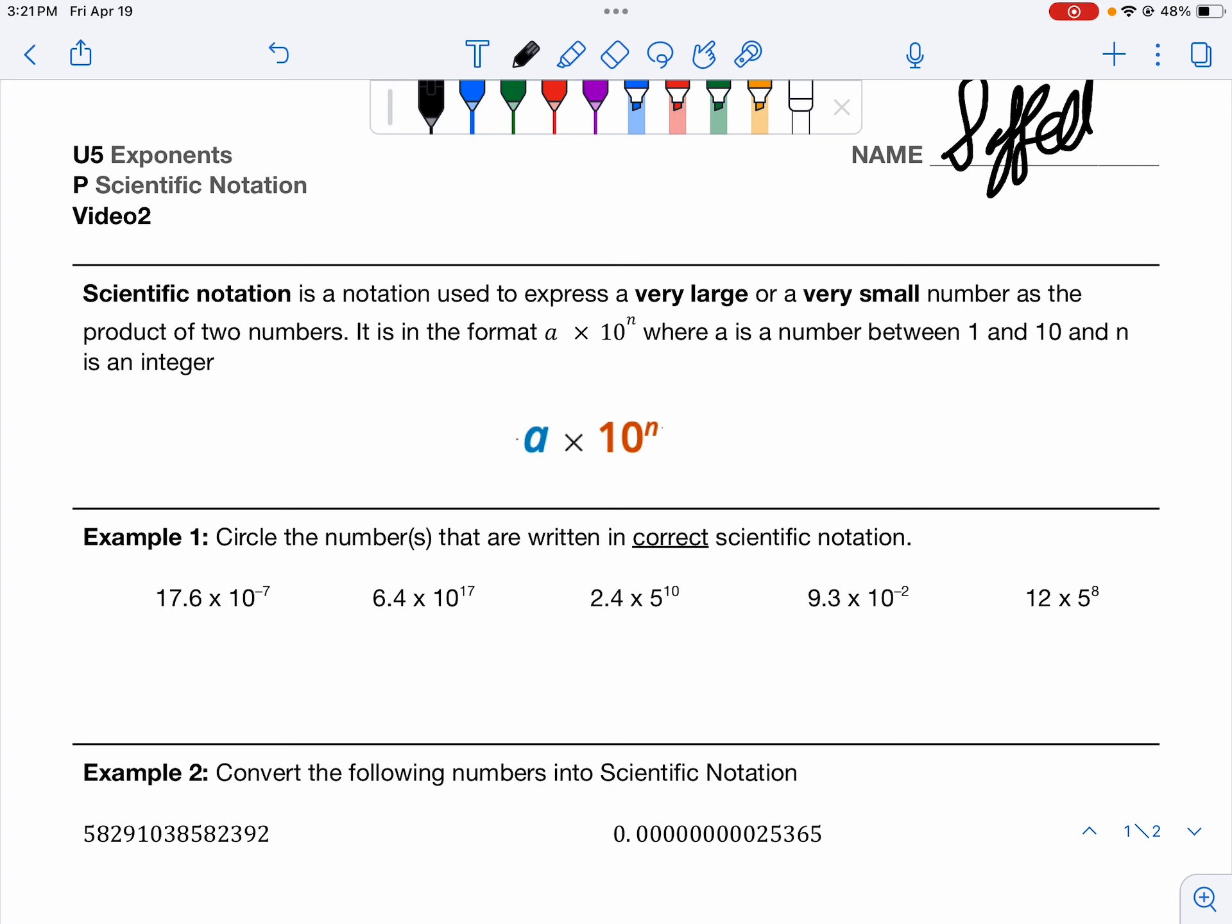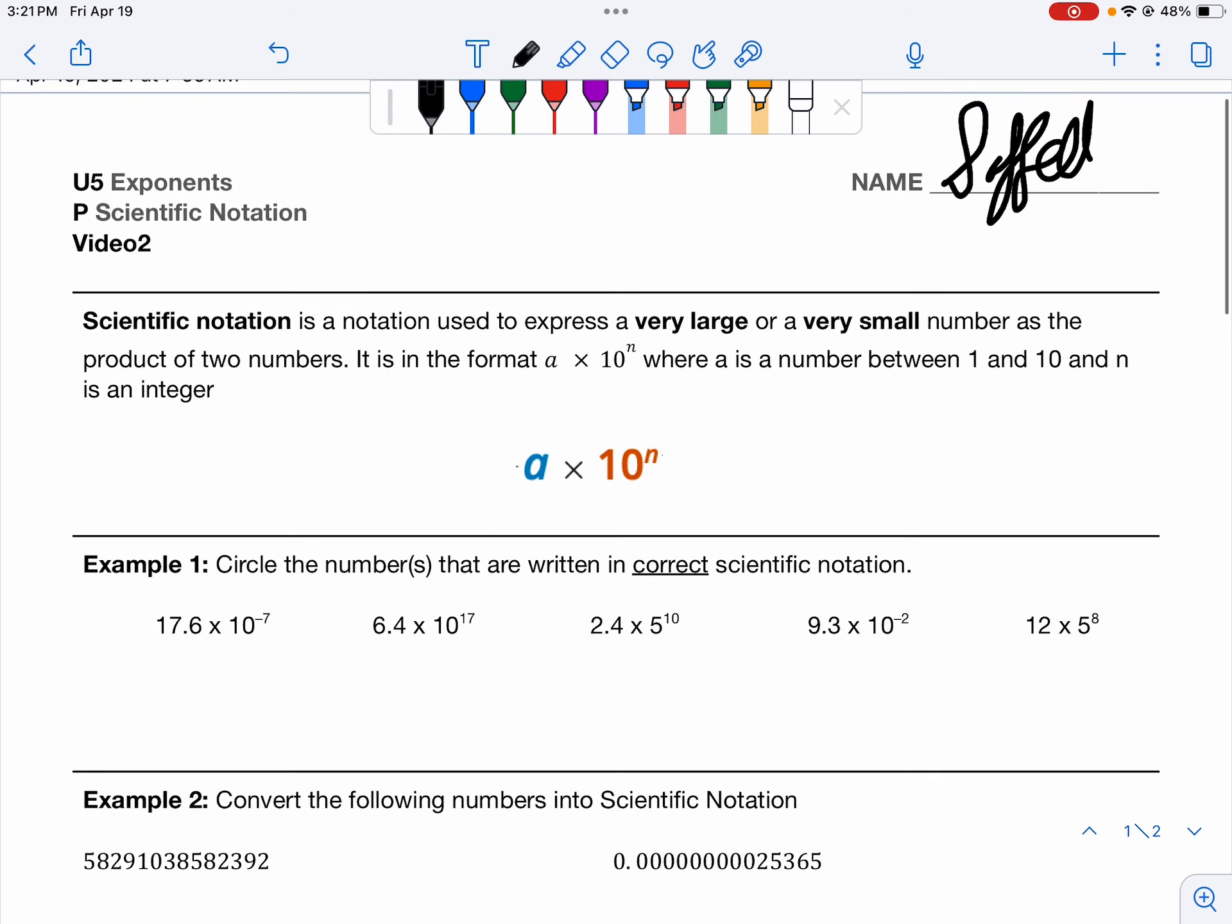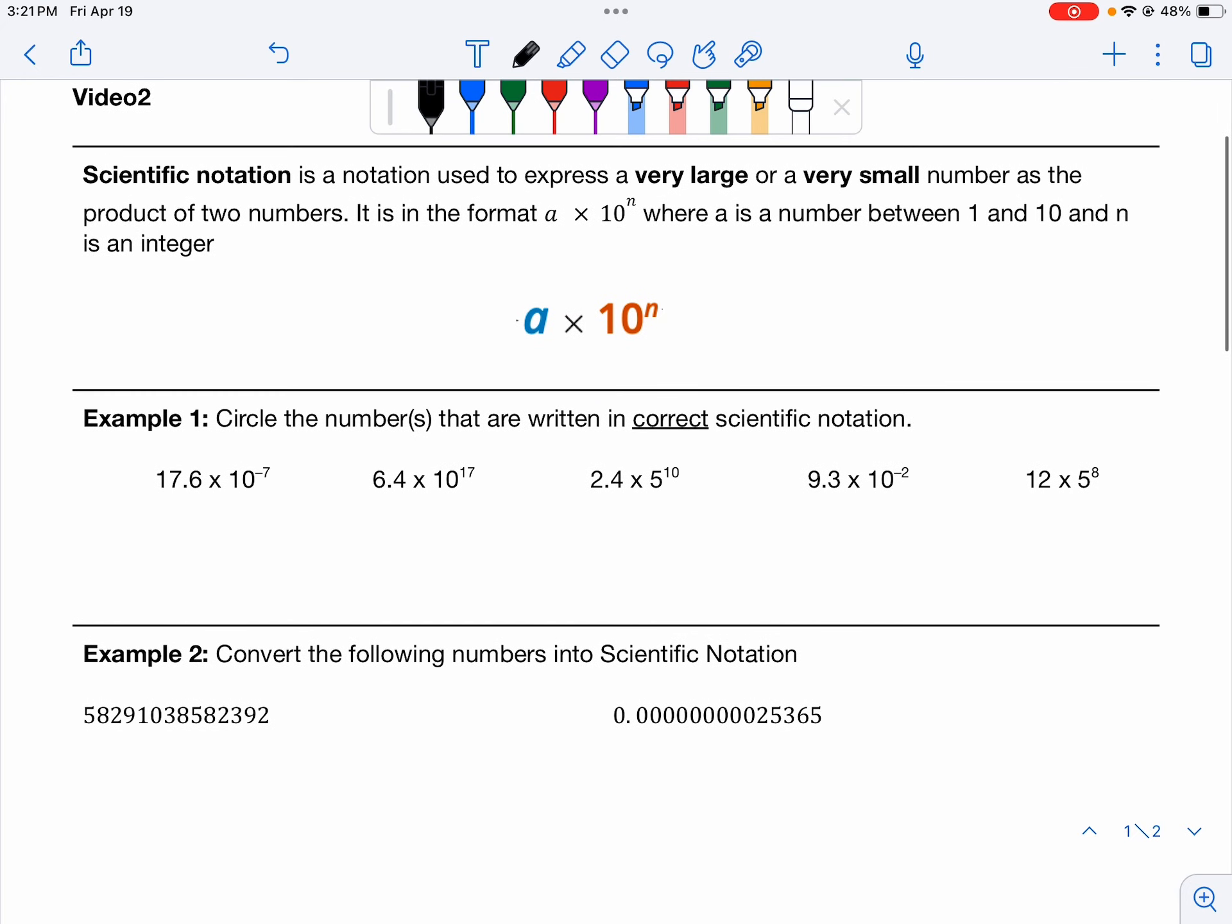So we have a standard notation that we use, which is called scientific notation. It's in the format of a times 10 to the n, where a is any number between 1 and 10, and n is an integer, meaning 1, 2, 3, those are the positive whole numbers, or negative 1, negative 2, negative 3, the negative whole numbers, which make up the integers.